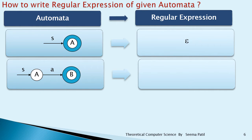In the second diagram, two states are shown: A and B. A is the starting state and B is the final state — it is double-circled. S is the starting symbol and A is the input alphabet to this diagram. The regular expression for this diagram is simply written as A.